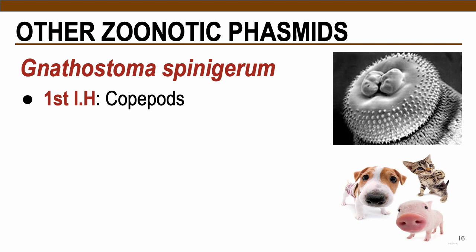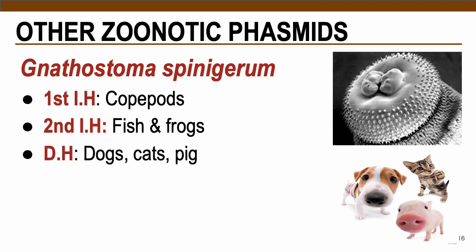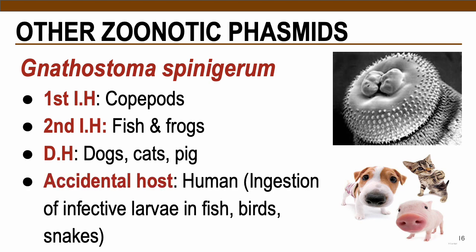In terms of the life cycle, they require copepods as their first intermediate host, while the second intermediate hosts are fish and frogs. The definitive hosts are dogs, cats, and pigs. Humans become accidental hosts by ingestion of infected larvae in the second intermediate host — fish and frogs.